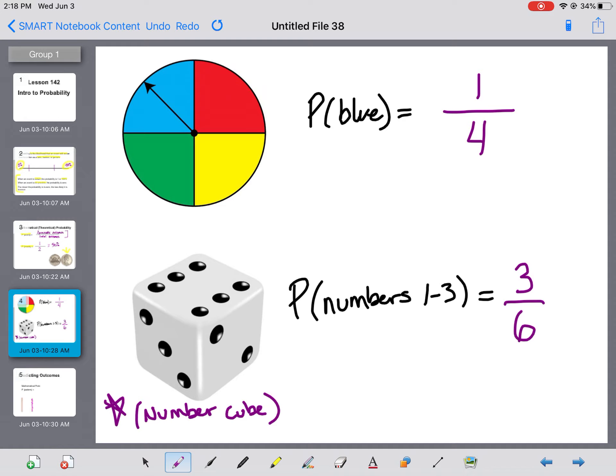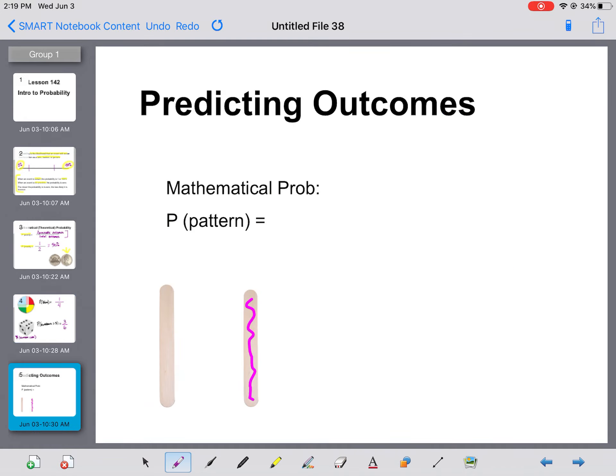And then the last thing for today is to talk about predicting outcomes. So what we have here, your textbook calls them pattern sticks, and really all they are is a popsicle stick. And then one side is plain and one side has a pattern on it. So the mathematical probability of flipping this pattern stick and having a pattern come up, well, it's the exact same thing as flipping a coin. We have one pattern side out of two total sides, so the probability is one half.